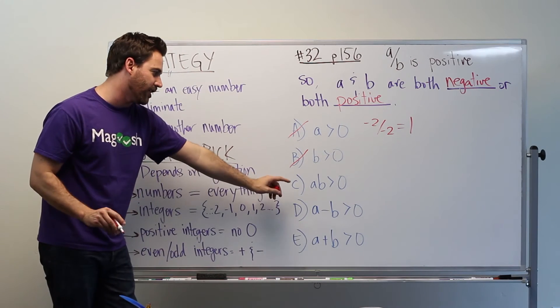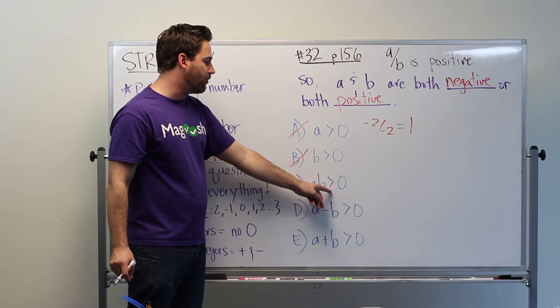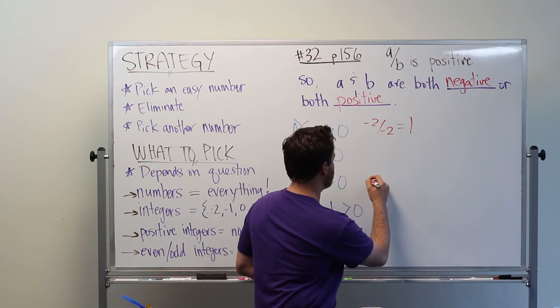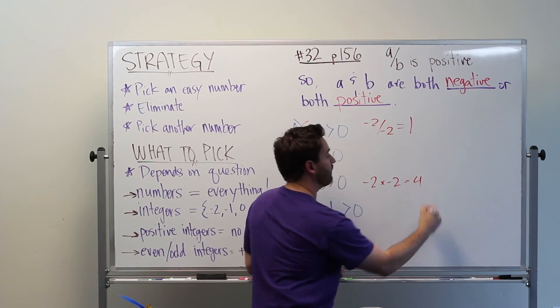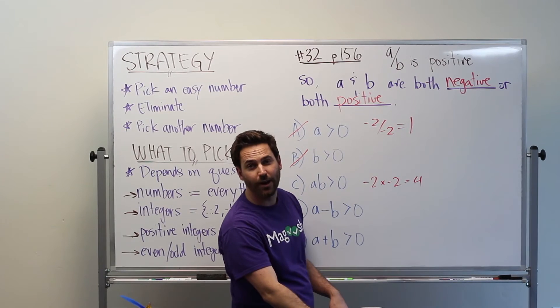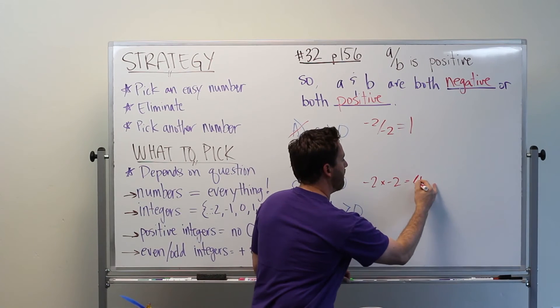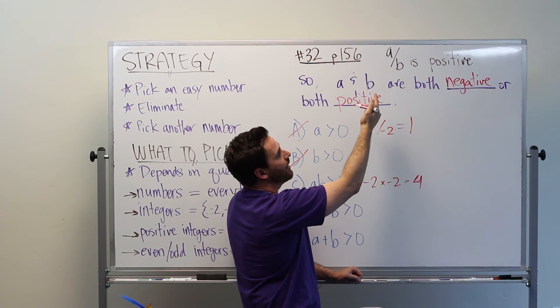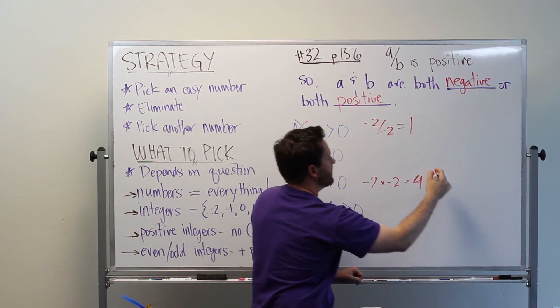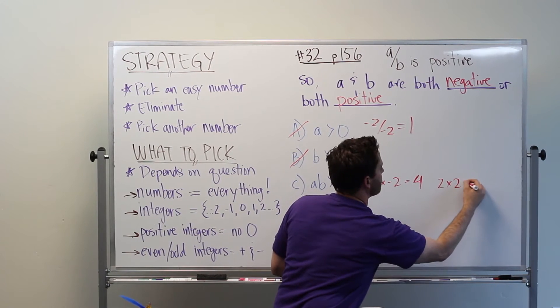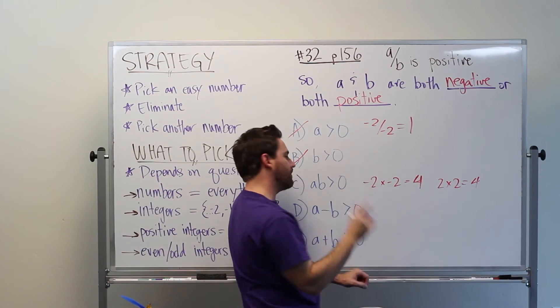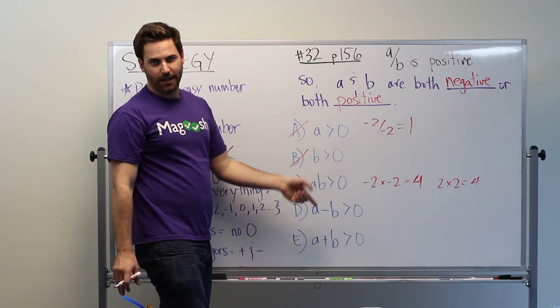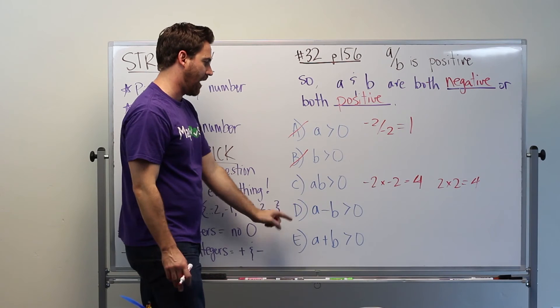If we look at C here, A times B is going to be greater than zero. So let's try our negative two. Negative two times negative two is going to be equal to four, so that is greater than zero. But I don't want to stop there. Let's try some other numbers that would also fulfill the information up there. So two times two, that equals four. So that's going to be greater than zero. This is looking like a good answer choice. But we want to continue on to make sure none of these actually work as well.